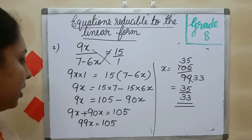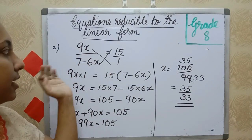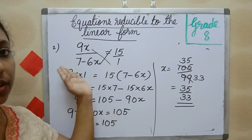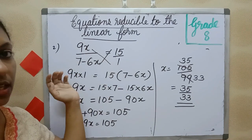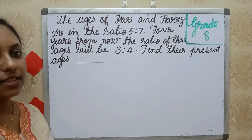So the value of x is 35 divided by 33. You can put the value of x in LHS and check whether LHS is equal to RHS. Next question.